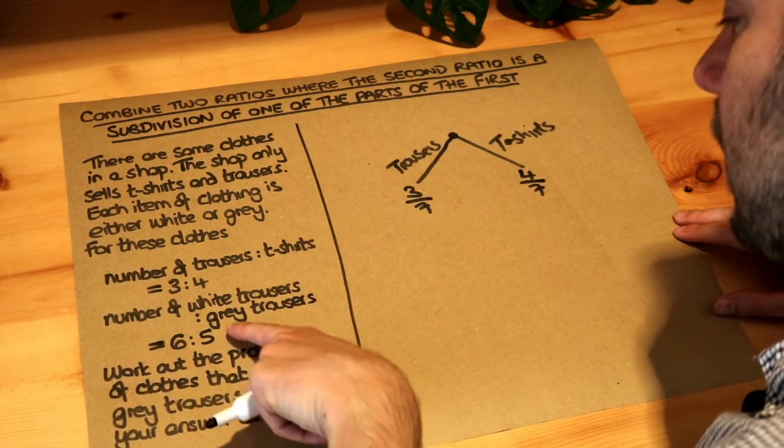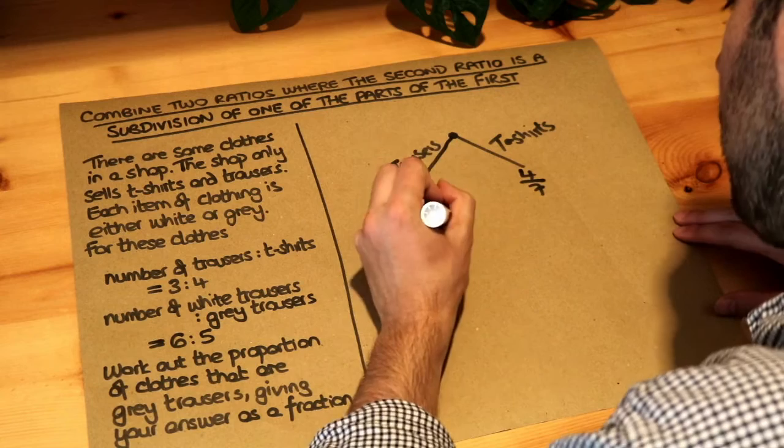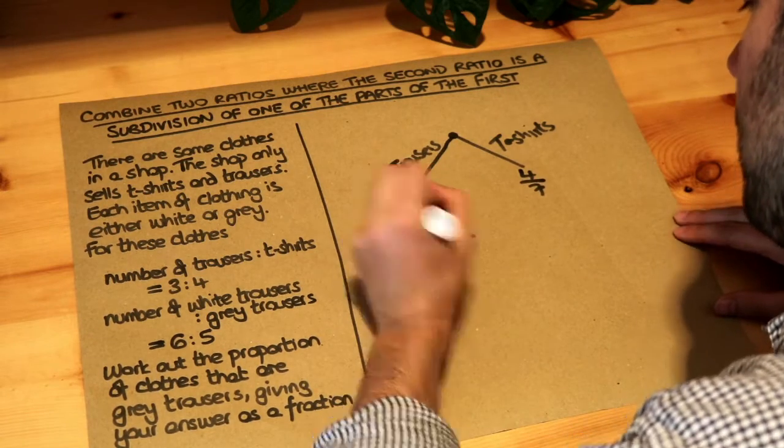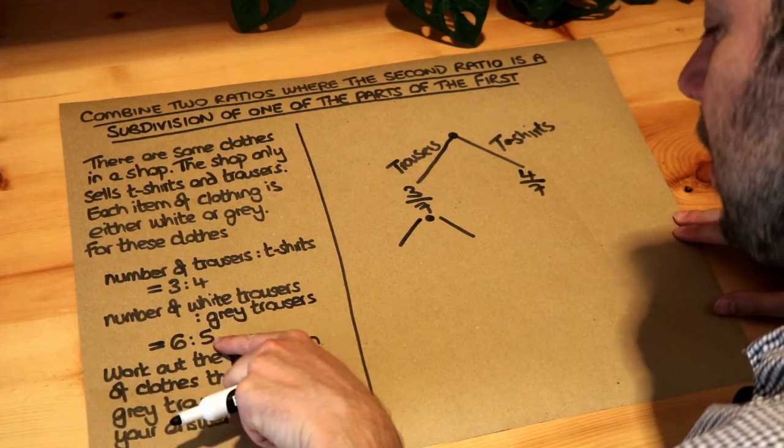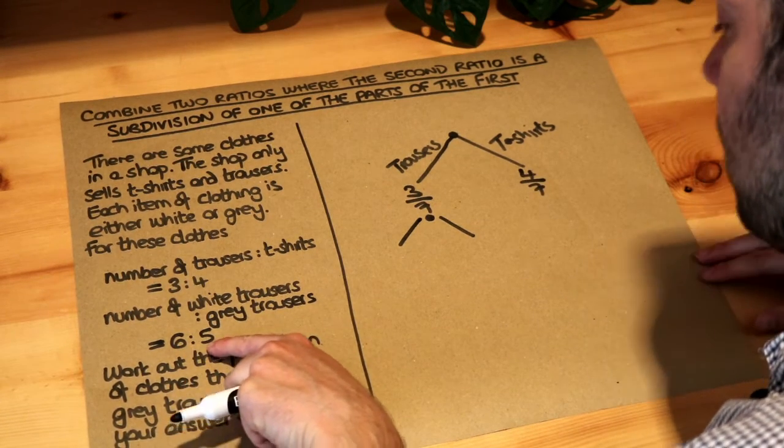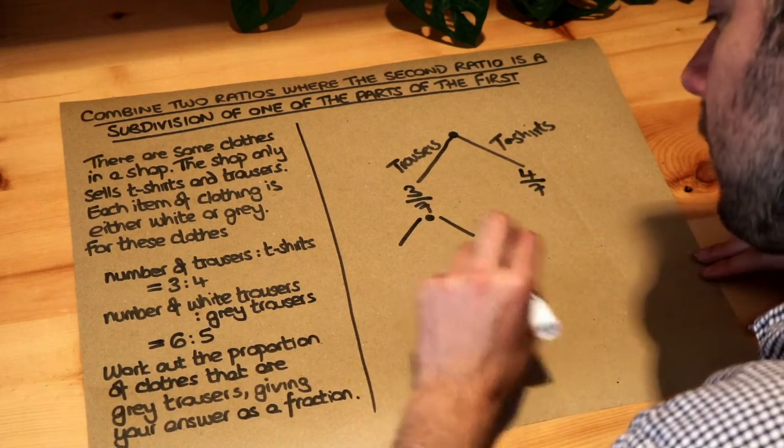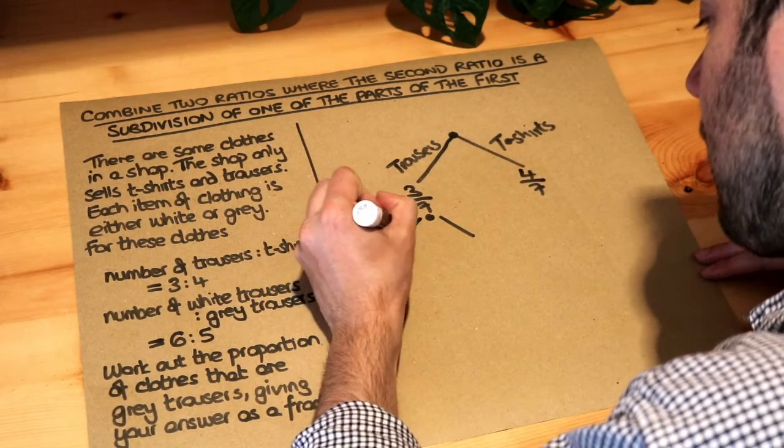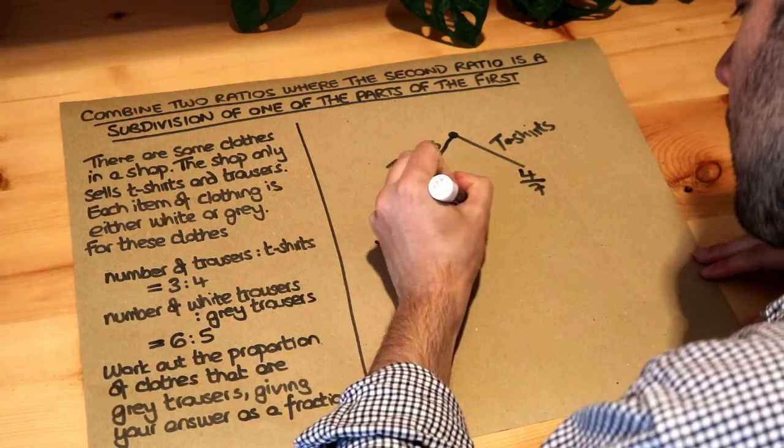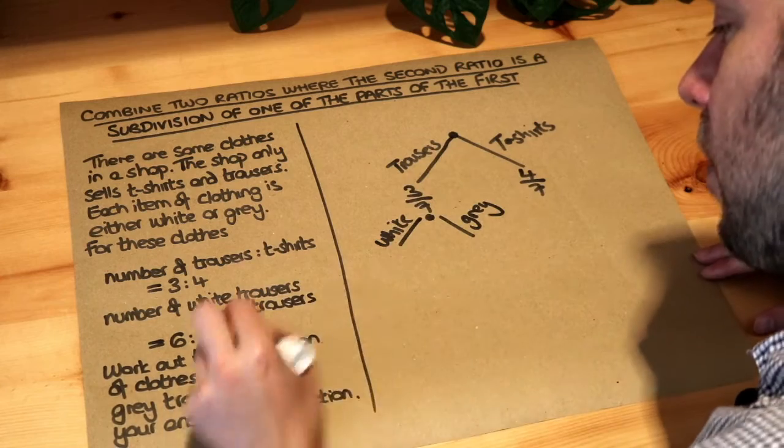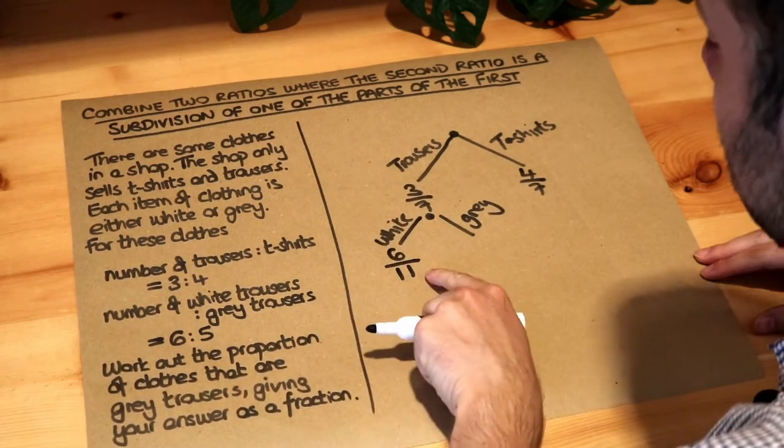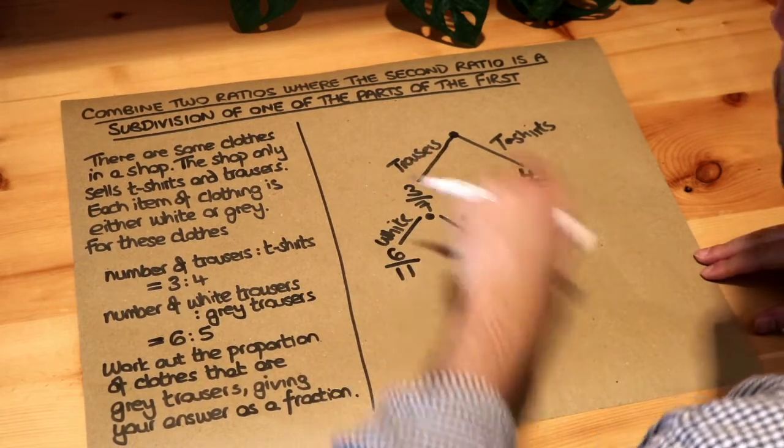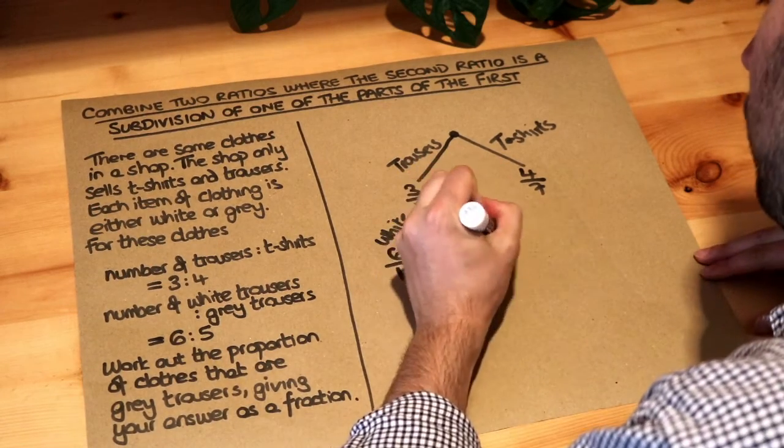The trousers are further subdivided. Of those trousers, we're told the ratio of white trousers to grey trousers is 6 to 5. That's 11 parts in total. So let's put white and grey. It's 6/11 which are white of the trousers. That doesn't mean 6/7 of all the clothes, it just means 6/11 of the trousers. And 5/11 are grey.